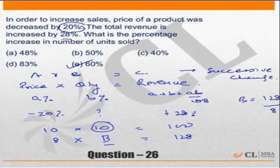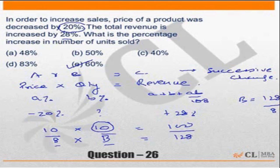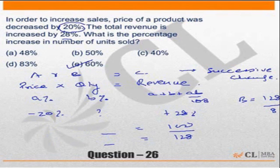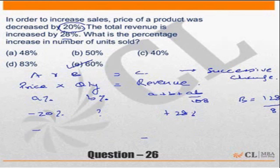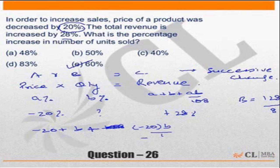When we look at these questions, the two methods in front of us are: one, assume the price and quantity values as 10 and 10 giving revenue of 100, and solve numerically. Alternatively, you could apply the successive increment formula. Applying the formula: minus 20 plus B plus (minus 20 times B divided by 100) equals 28. You can then solve for B.